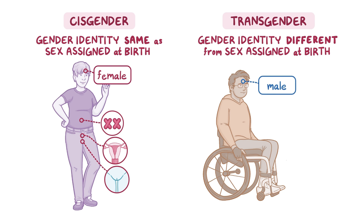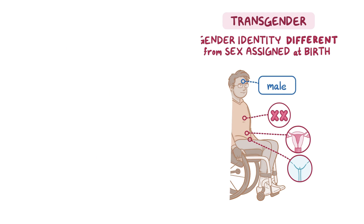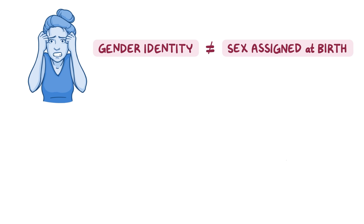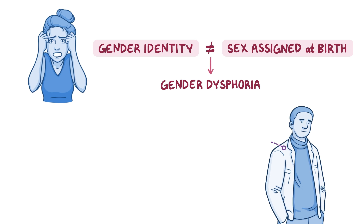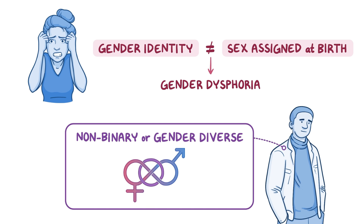Sometimes a person can experience significant psychological distress when there's a mismatch between their gender identity and their sex assigned at birth. This is called gender dysphoria. It's also important to note that some people may identify as nonbinary or gender diverse, meaning their gender identity is not exclusively male or female.